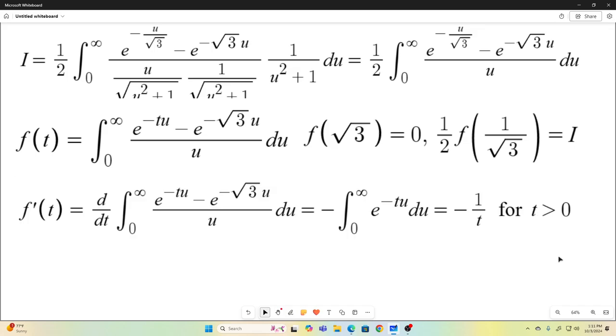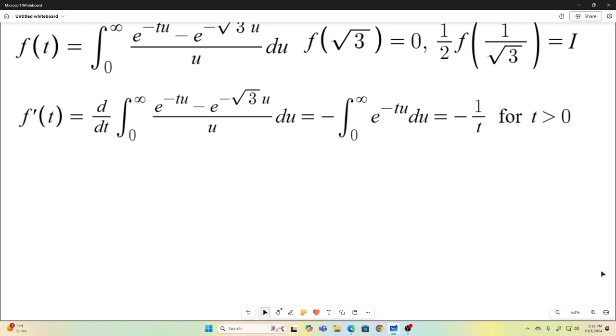Next, we're going to take the derivative of f of t with respect to t, using the Leibniz rule for differentiation under the integral sign. All we have to do is take the partial with respect to t of the integrand here. That integral is very easy to evaluate. It evaluates to negative 1 over t, provided that t is greater than 0, because if t is not greater than 0, this integral would not converge.